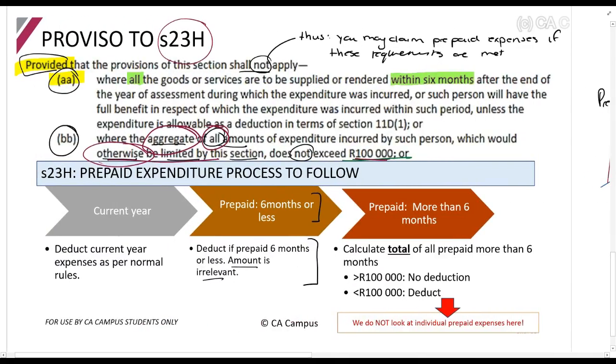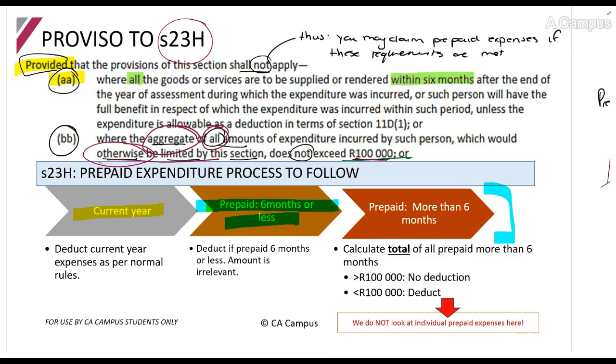So that is Section 23H. Here's the process, this little flow thing at the bottom. You will first calculate what is the current year amounts and deduct it. Then you will identify all of the prepaid amounts, the ones which are 6 months or less, deduct. Then add up everything else which is left, so these are all of the ones which are more than 6 months. If the total of all of them is greater than 100,000, there's no deduction. If it's less than 100,000, there's a deduction.